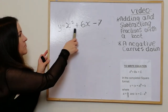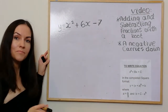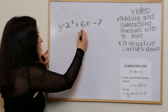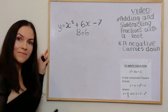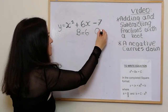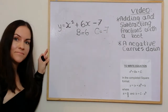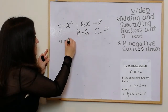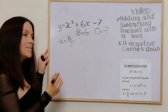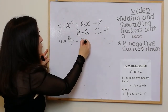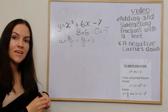Looking at our first example, we need to establish the values of b and c. So b is 6 and c is minus 7. To get little a, we do big B over 2. Big B is 6, so that's 6 over 2 which is 3. So the value of a is 3.